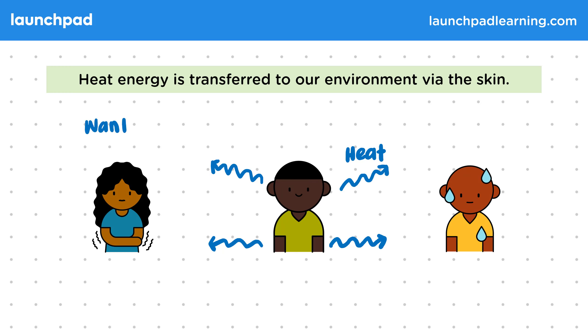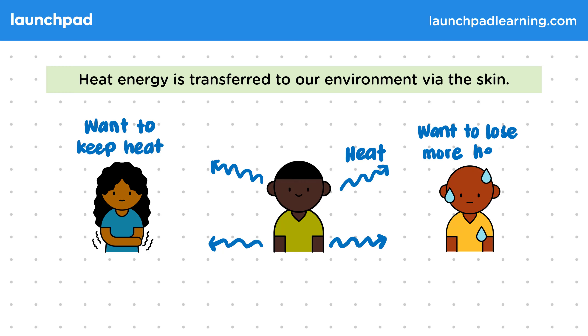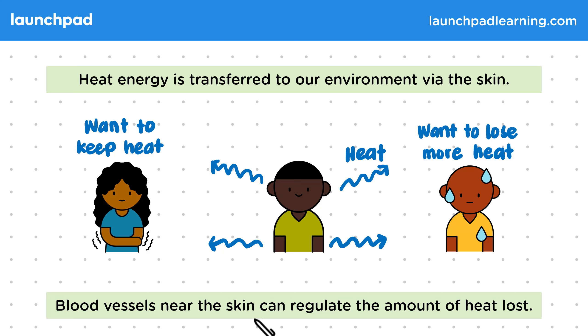If you're cold, you want to keep heat, and if you're hot, you want to lose as much heat as possible. Blood vessels near the skin can regulate the amount of heat lost. But how do the blood vessels do this?